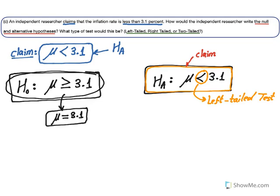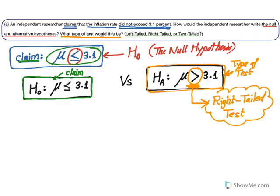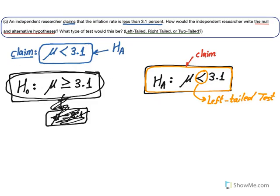It's worth noting that in some questions the null hypothesis could also be written as μ = 3.1, with the alternative written as strictly less or strictly greater. Always the alternative has a strict inequality. If it's causing confusion, just write the opposite of what you have for the other hypothesis.